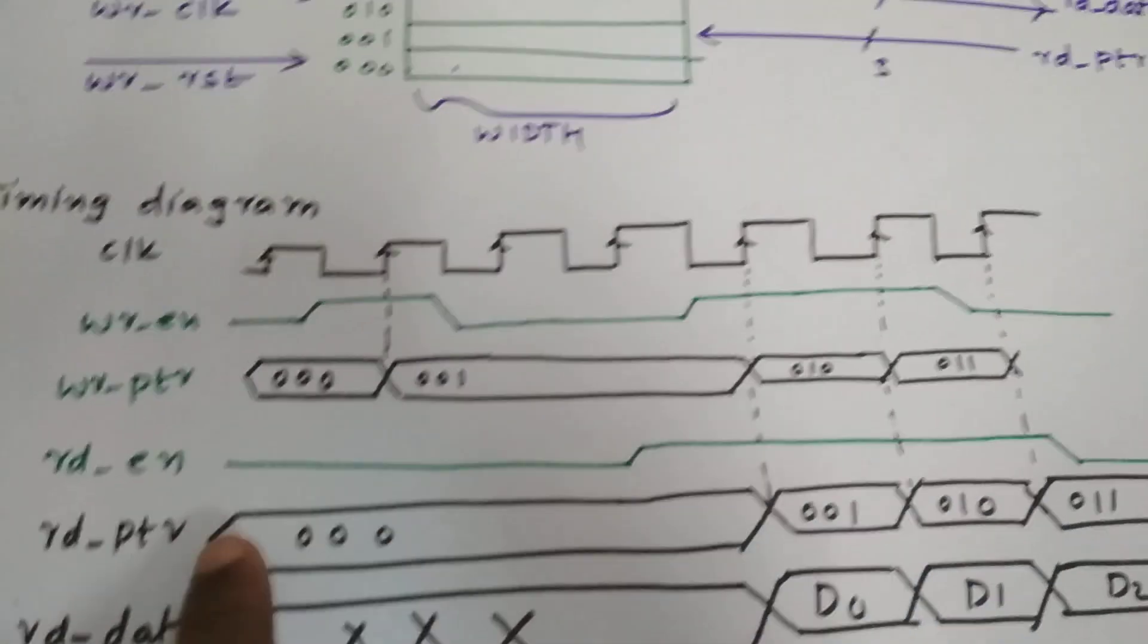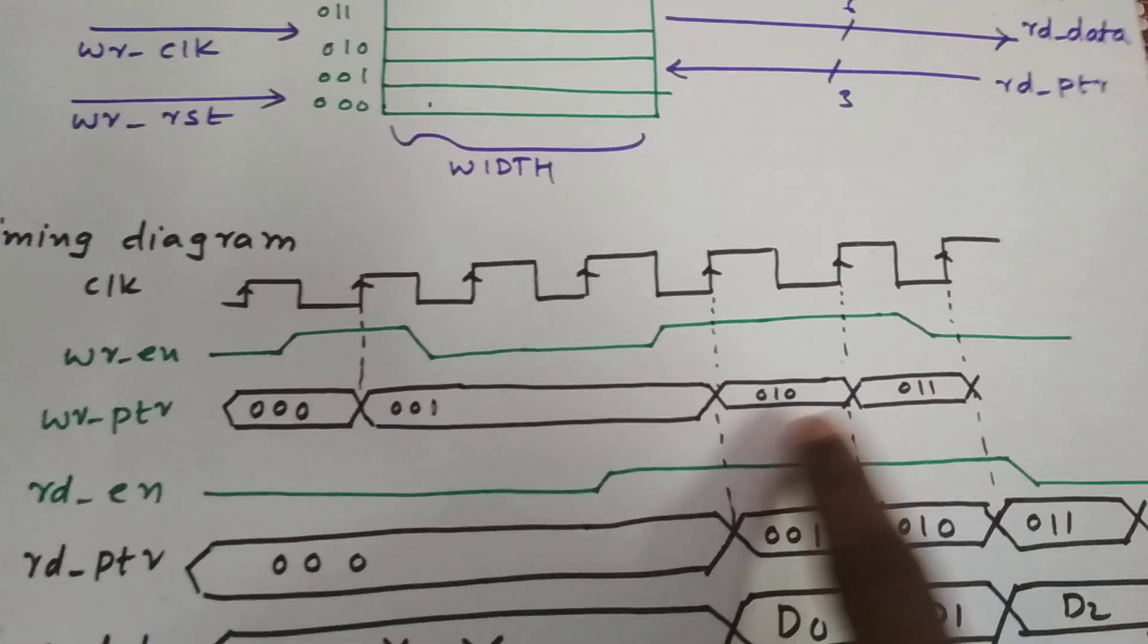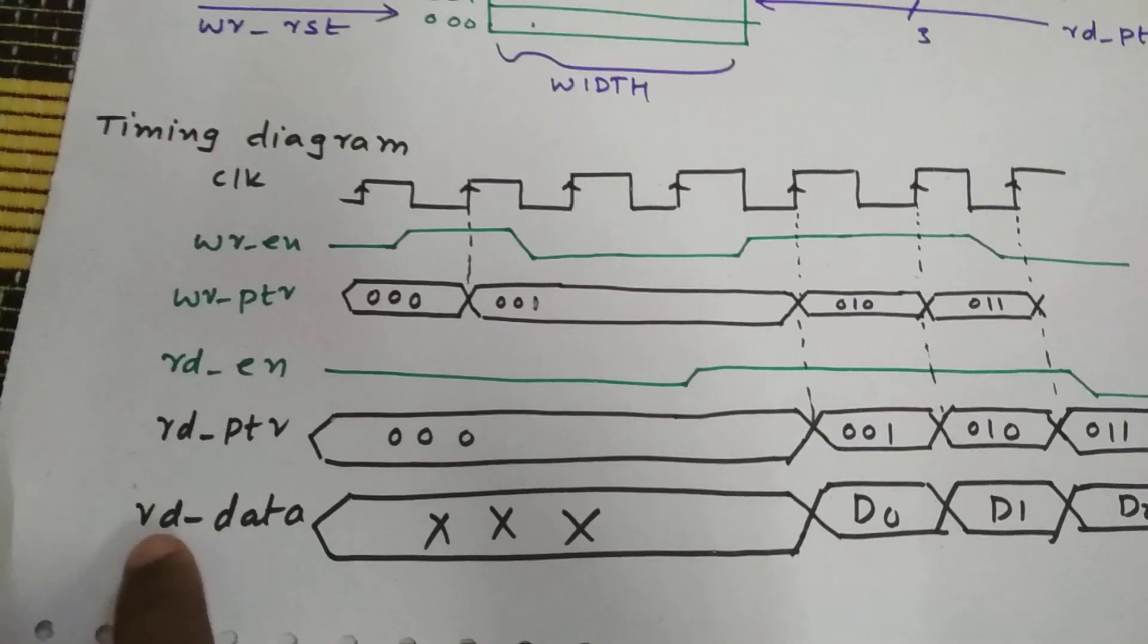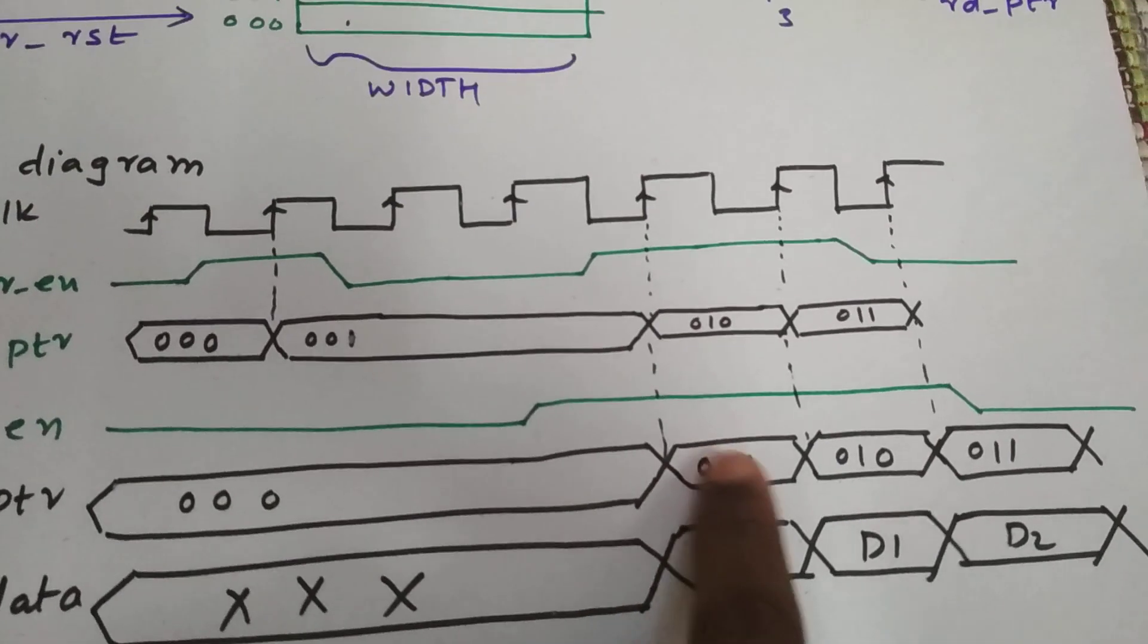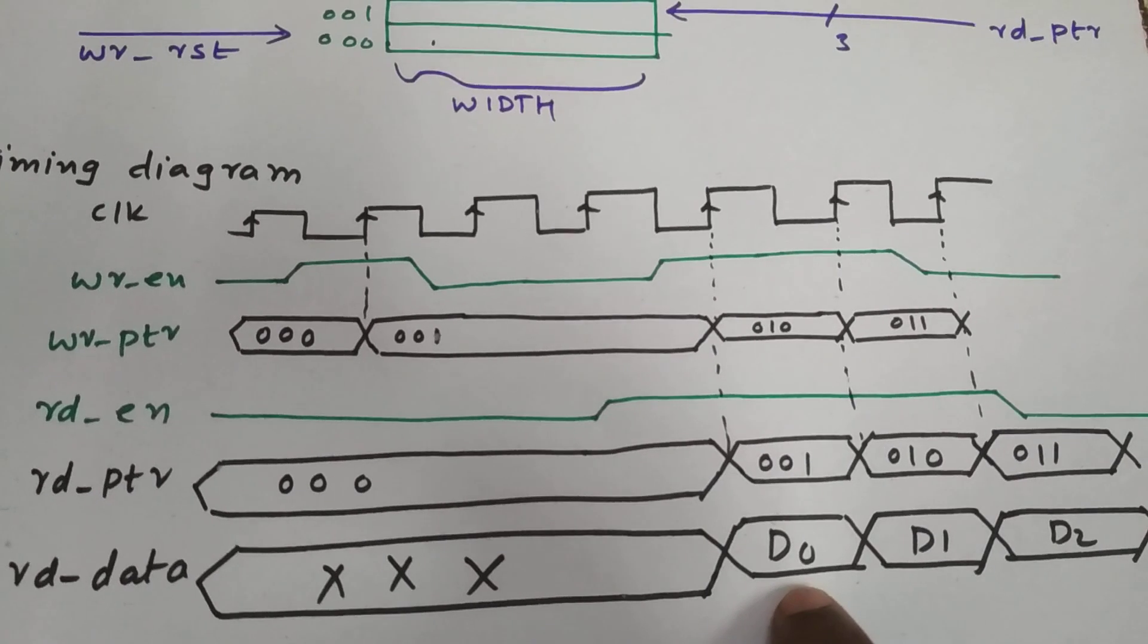And read pointer will be incremented at the similar positive edge whenever the read enable is high. And we'll read the data from that exact point, from the location of read pointer. At 000, we are reading D0.